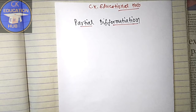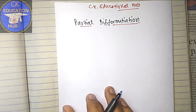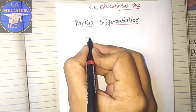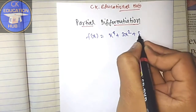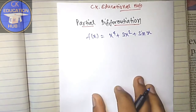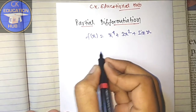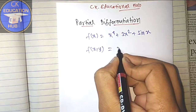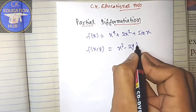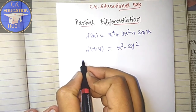Hello guys, today we're going to study partial differentiation. Earlier we were studying the differentiation of single variable, like f(x) = x⁴ + 3x² + sin(x), something like this. But now we will study the differentiation of two variables, like f(x,y) = x³ - 3y², or functions of more than one variable.